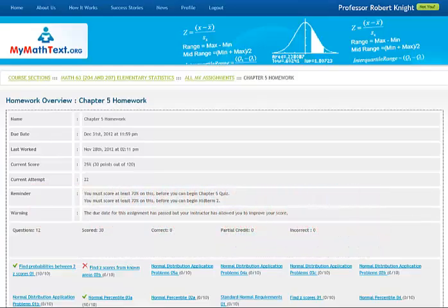The green check means that you have successfully answered that question. The red X means that you answered the question incorrectly. Questions that you have not attempted are left without either a check or a red X.